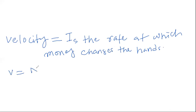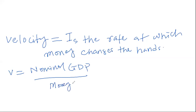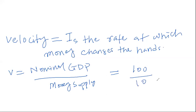Velocity equals nominal GDP — which is the output or production in the country — divided by the available stock of money, or money supply. So nominal GDP divided by money supply gives us the velocity of money. For example, if output is 100 million and money supply is 10 million, a rupee will change hands ten times.